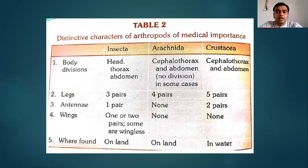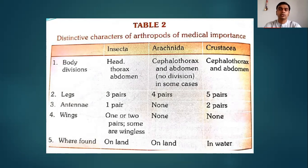What are the distinctive characteristics of these arthropods of medical importance? From your high school days, you learned how to identify and classify them depending on different body parts. Regarding body divisions: class Insecta has head, thorax, and abdomen. Class Arachnida has cephalothorax and abdomen — there is no distinctive differentiation between head and thorax, so we call it cephalothorax. In some cases of Arachnida, there is even no distinction between cephalothorax and abdomen. In Crustacea, cephalothorax and abdomen are distinct.